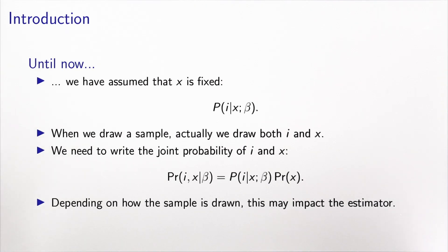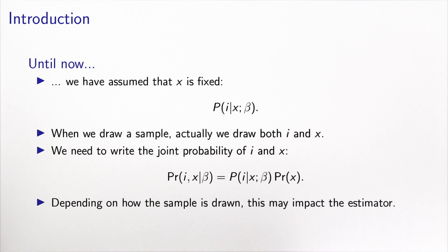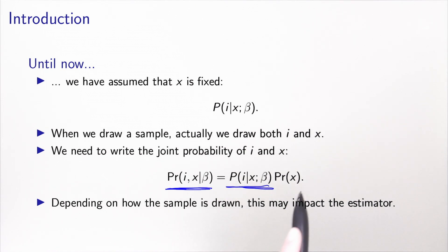Until now, we have assumed that x, the explanatory variables, is a fixed vector. So we have written our model as the probability to choose alternative i, conditional to the fact that we know x. But when we draw a sample, we actually select individuals who are associated with a specific value of i and a specific value of x. So basically we draw both i and x together. Therefore, what we actually need to write is the joint probability of i and x as a function of the unknown parameters. And this can be decomposed as the choice model — the probability of i given x — times the probability of x. And depending on how the sample is drawn, this may impact the estimator itself.